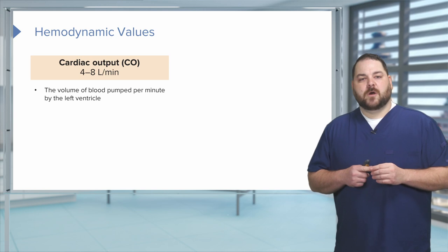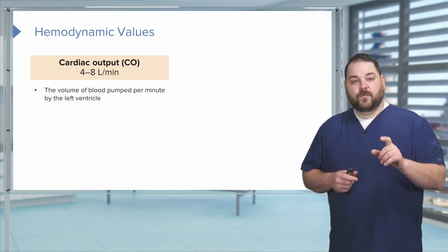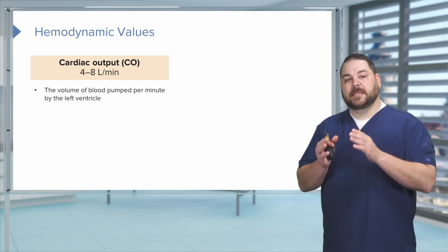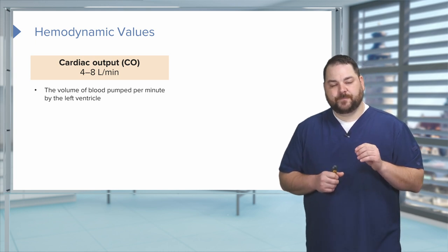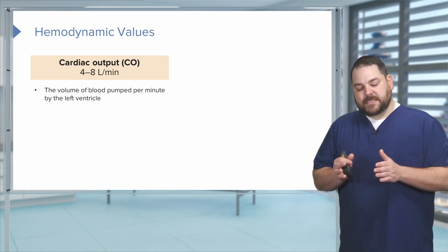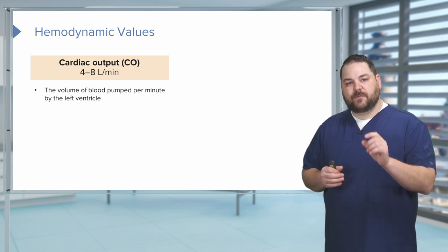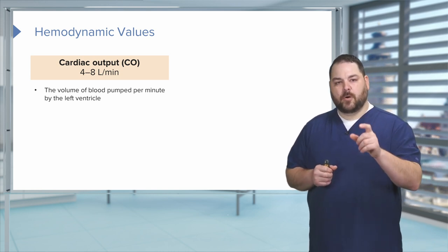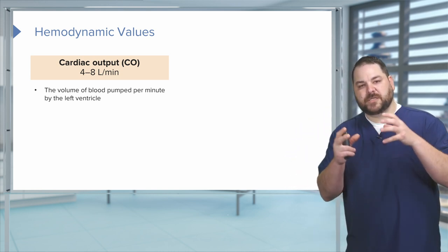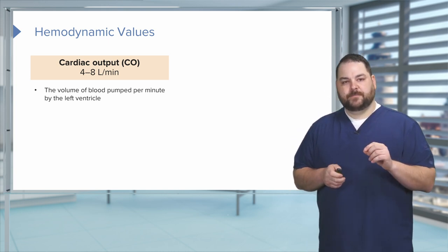The first value we're going to talk about is cardiac output. The normal cardiac output is between 4 and 8 liters per minute. Cardiac output is basically how much blood is coming out of that left ventricle per minute — how much blood is squeezing out of that left ventricle per minute.